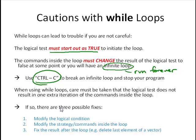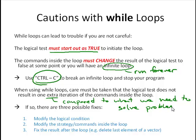The other thing we talked about is that when we're using while loops, we must be careful and make sure that the logical test does not result in one extra iteration of the commands inside of the loop, extra compared to what we need to solve the problem. If that happens, we mentioned a few ways to address that. One, we can modify the logical condition if that's possible. Two, we can modify our strategy and or our commands inside the loop. Or three, we can just fix the result after the loop.